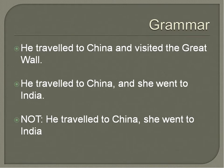Don't comma splice. A comma splice is sticking a comma between two independent clauses. So, 'he traveled to China, she went to India' — don't use a comma there. If you write a sentence like that, it should actually be a period. 'He traveled to China, period. She went to India.' So pay attention to those comma rules, because the comma is one that becomes problematic for a lot of people.